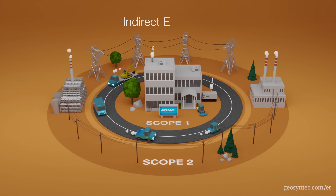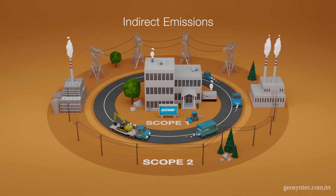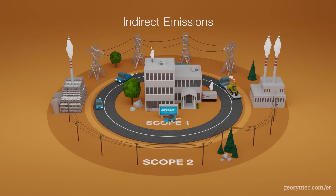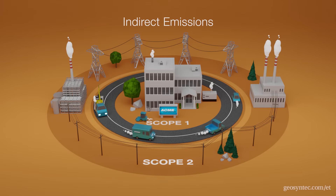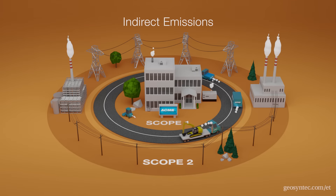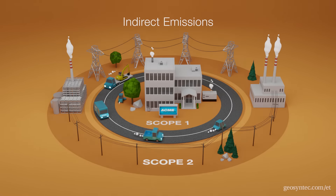Scope 2 greenhouse gas emissions are indirect emissions. This often refers to heat trapping gases from generating electricity we purchase and use at a site. All emissions generated by anything we use for site operations also fall into the Scope 2 category, so long as the gases were emitted elsewhere.